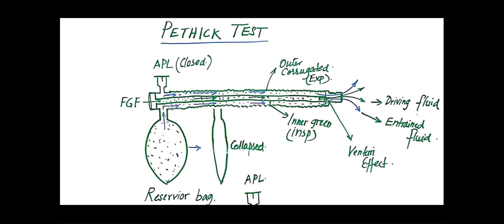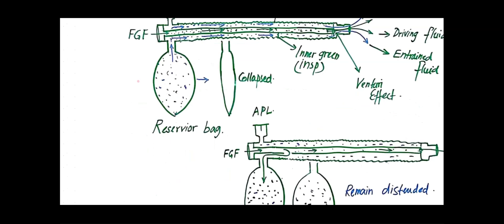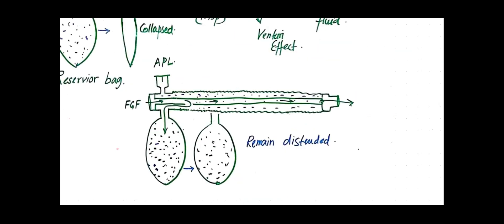Now, what happens when the inner tube is broken? The gases, instead of passing entirely towards the patient's end, leak out of the inner tube through the broken part and pass into the reservoir bag. This reservoir bag then remains distended with these gases coming out through the broken part.